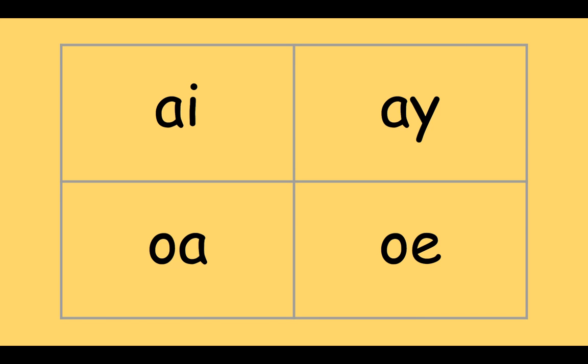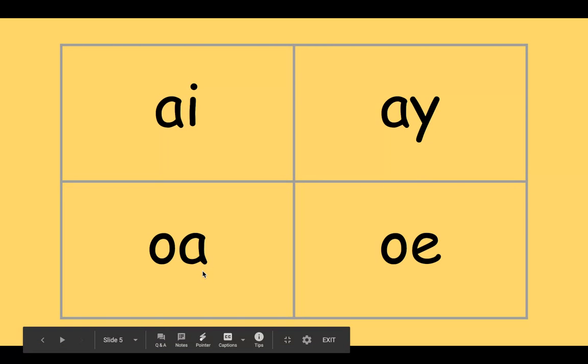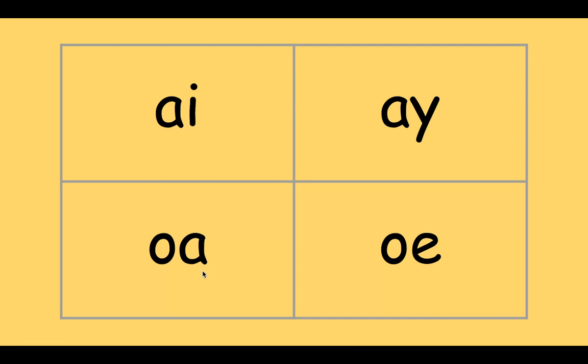Next word: 'pail.' A pail is a bucket. That's AI—it comes right in the middle. Next word: 'soap.' I hear O right in the middle, so that's OA. Next word: 'stay.' That is AY—I hear A at the end.